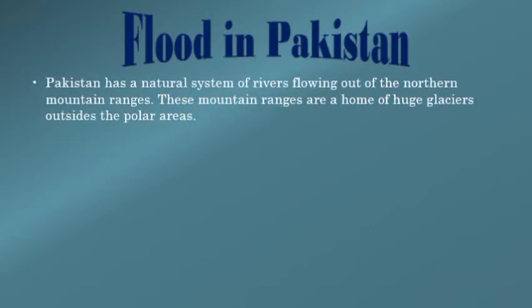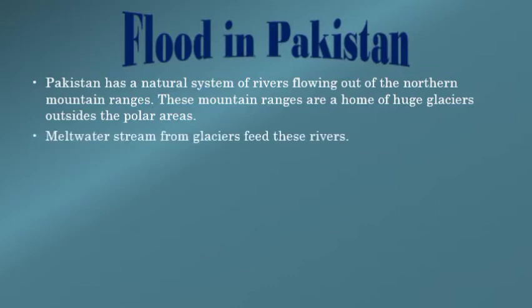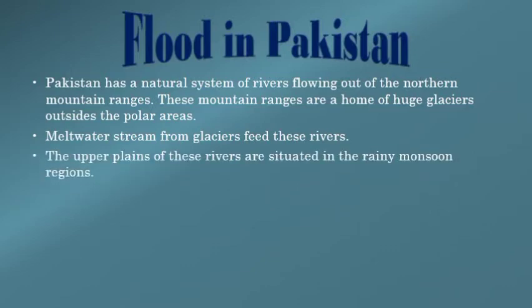Flood in Pakistan — now we will see what are the reasons of flood in Pakistan. Pakistan has a natural system of rivers flowing out of the northern mountain ranges. These mountain ranges are home to huge glaciers outside the polar areas. Pakistan میں دریاؤں کا ایک قدرتی نظام ہے جو شمالی پہاڑی سلسلے سے بہ رہے ہیں۔ ان mountain ranges میں سردیوں میں برف باری ہوتی ہے اور بڑے بڑے glaciers بھی ہیں۔ Melt water stream from glaciers feeds these rivers — summer season میں جب temperature rise ہوگا تو یہ glaciers melt ہوتے ہیں اور پانی کی صورت میں ان دریاؤں میں شامل ہو جاتے ہیں۔